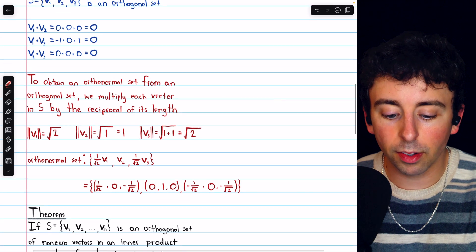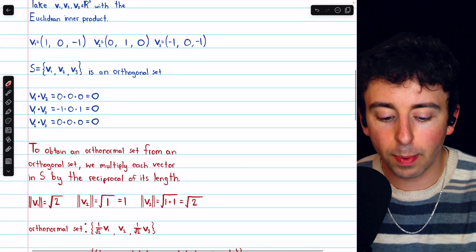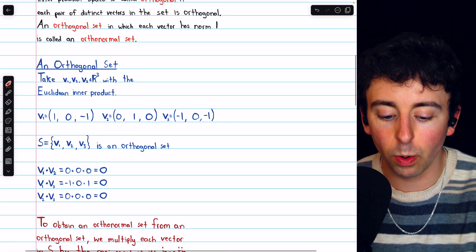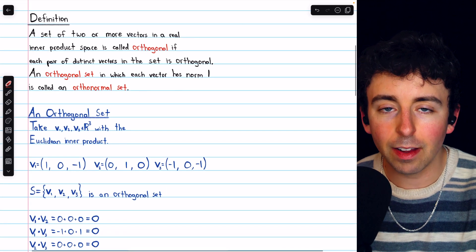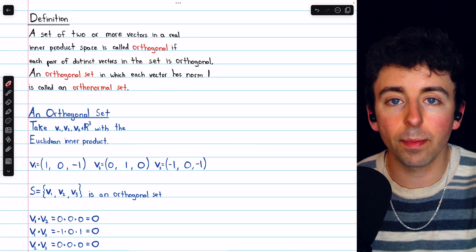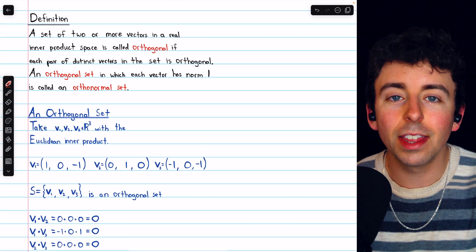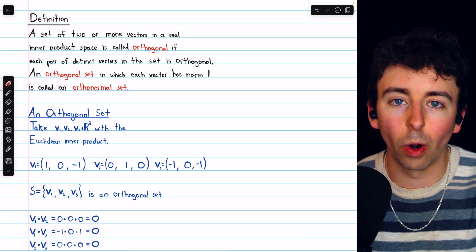So one more time, an orthogonal set of vectors in a real inner product space is a set of vectors that are all orthogonal to each other. And if they all have a norm of 1, that is, they're all unit vectors, then what you have is an orthonormal set.